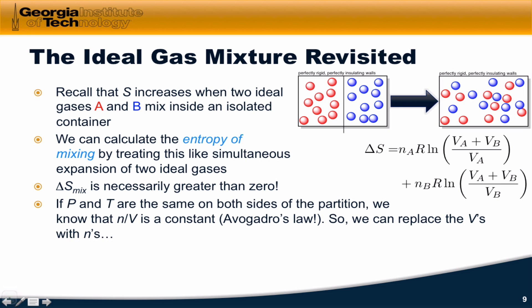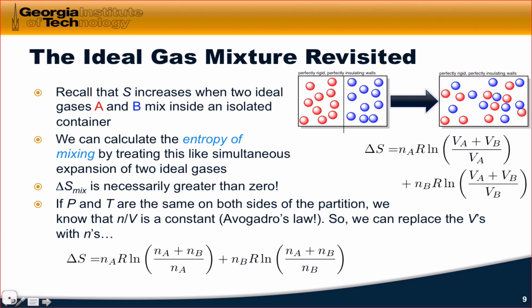But now, if pressure and temperature are the same on both sides of the partition, that is, if pressure and temperature are constant throughout this process, we know that the ratio of N to V is a constant. N over V is a constant. That's just Avogadro's law, which is an incarnation of the ideal gas law at constant pressure and temperature. So that means that we can replace each of these volumes inside the natural logarithm with numbers of moles and write the expression you see at the bottom of the slide.